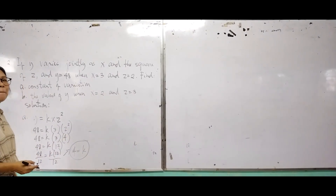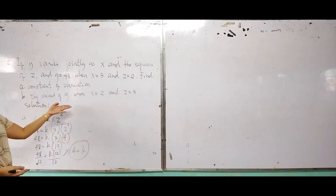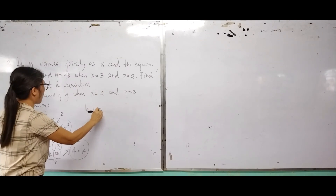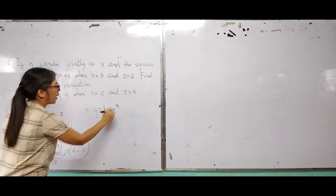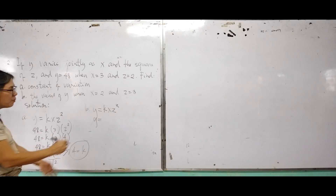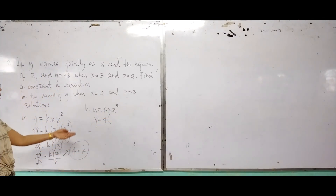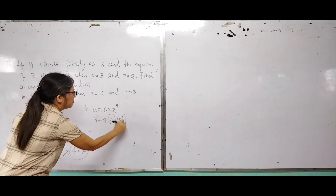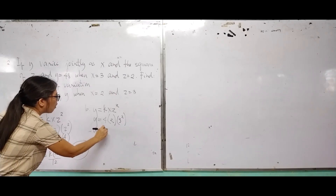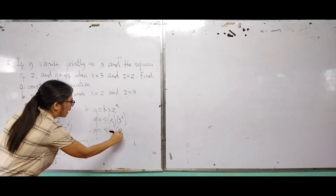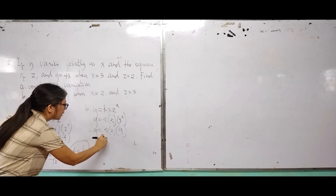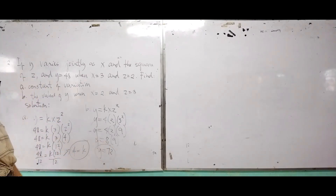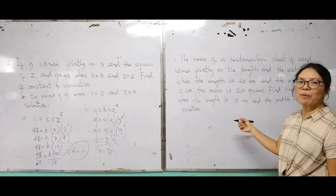For letter B, find the value of Y when X equals 2 and Z equals 3. Write the equation: Y equals K times X times Z squared. Substitute K with 4, X with 2, and Z with 3: Y equals 4 times 2 times 3 squared, which is 9. So Y equals 4 times 2 times 9, which is 8 times 9. Y equals 72.